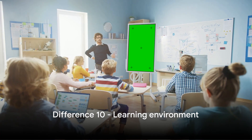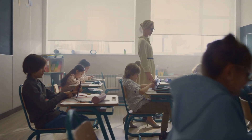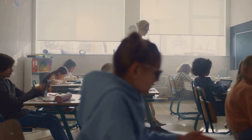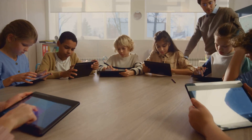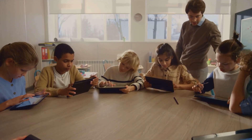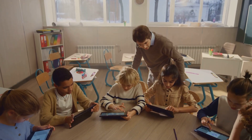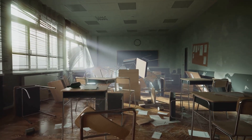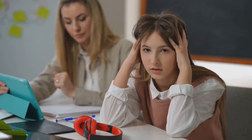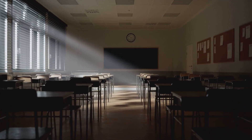Kicking off at number 10, we have the learning environment. Picture this: a state-of-the-art classroom with all the latest tech, surrounded by vast green spaces for outdoor learning. This is the reality for many well-off students. They get to learn in an environment that's not just comfortable but also conducive to their growth and development. On the flip side, students from less privileged backgrounds may not be as lucky. Their classrooms might be overcrowded, under-resourced, and in some cases even lacking basic amenities. This disparity can create challenges that go beyond just academic performance — it can affect a student's motivation, engagement, and overall well-being.